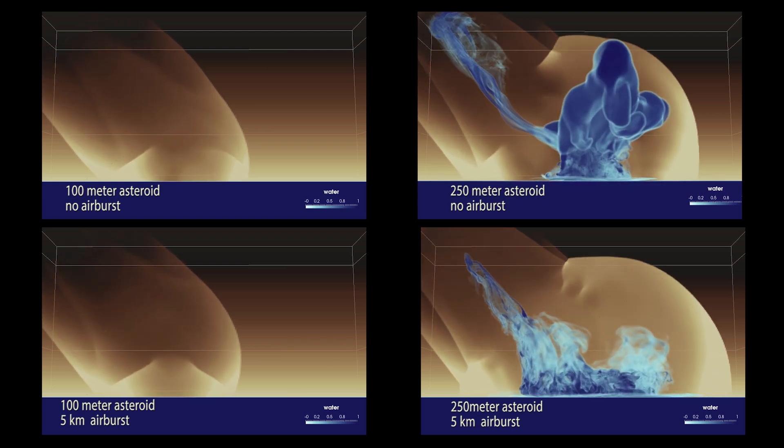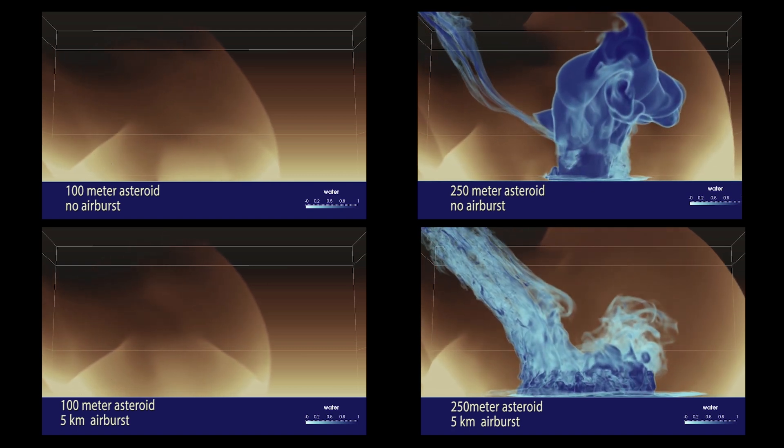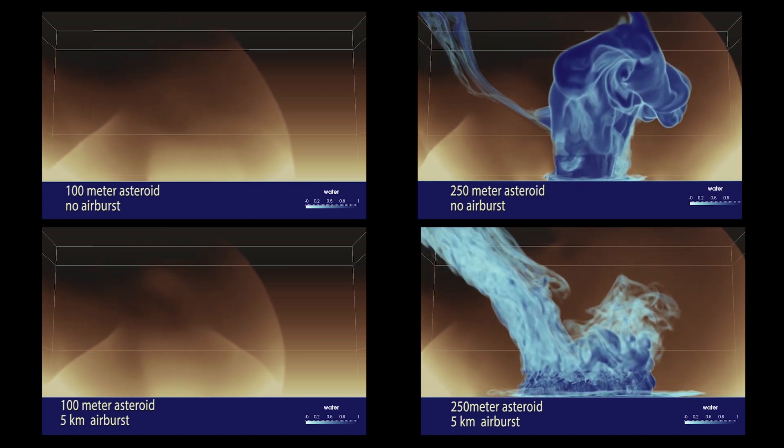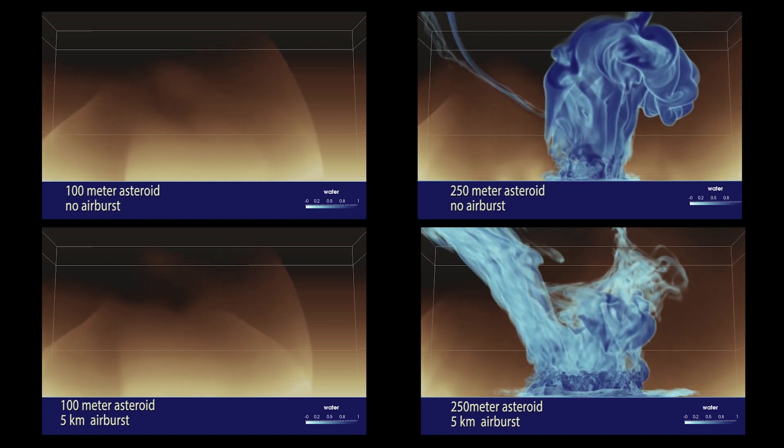Here, a light-colored pressure wave shows the asteroid's effect on the atmosphere. In addition, a large plume of water rises from the largest asteroid impact. Clearly, more kinetic energy is transferred to the water in this simulation.